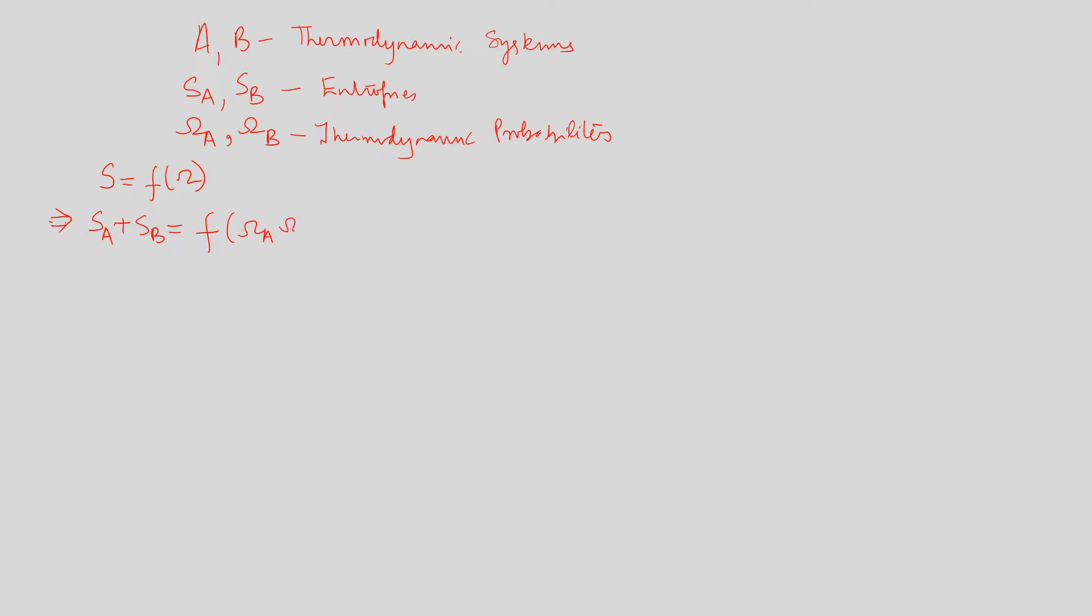So here omega will be equal to the product of omega A with omega B. We can write SA as f of omega A and SB as f of omega B. Let us number this equation as equation number one, then differentiate one